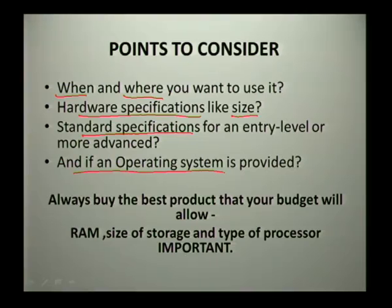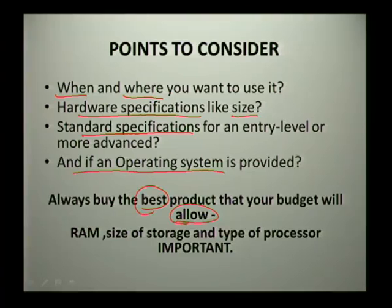This is very important: always buy the best product your budget will allow. If you can afford a four-thousand-rand computer but you feel the hard drive and RAM aren't the best, and you see another one for 4,500 — rather stretch to that one. Go for what you can afford, but know that it is the best product you are buying. The RAM, the size of storage, and the type of processor are all very important, and you need to understand how these three basic hardware components work together.